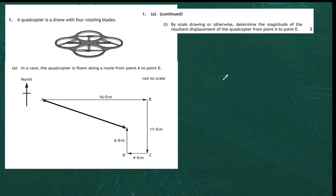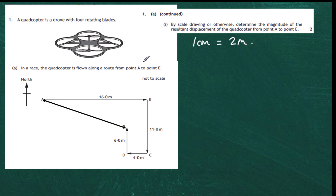On a piece of paper we must come up with a scale. The scale I'm going to use is to fit 16 metres onto my exam paper or notebook. I'm going to say that 1 centimetre on my notebook will represent 2 metres in the diagram. So I go through the diagram and change the 16 metres, 11 metres, 4 metres and 6 metres into the actual lengths I'll put on paper. So 16 metres will be transferred into 8 centimetres, because 1 centimetre stands for 2 metres.